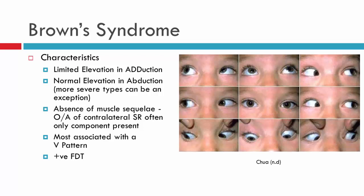In terms of A and V patterns, Brown syndrome is more regularly associated with a V pattern. Looking at the child here from primary position, up gaze and down, it does appear this child may have a V pattern, although direct elevation is slightly off to the left, making it difficult to assess. The last finding is the positive force duction test — because Brown syndrome involves a mechanical restriction, the force duction test will be positive.